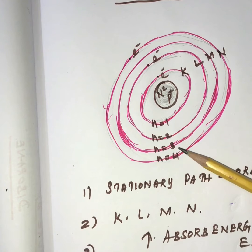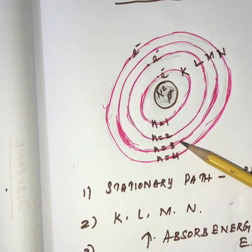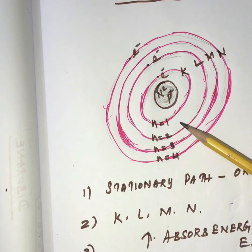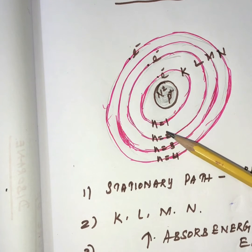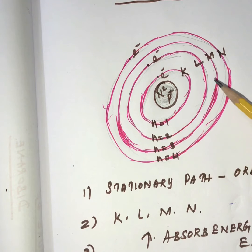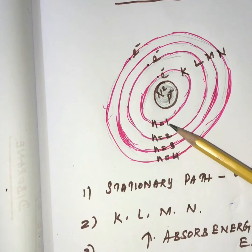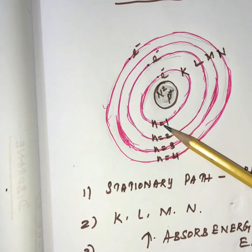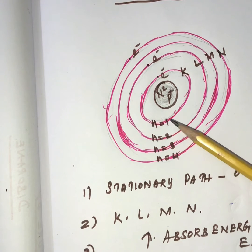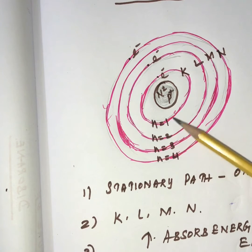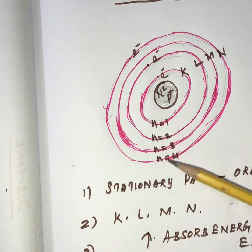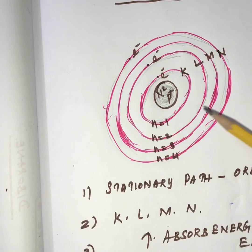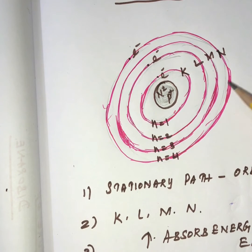The number of electrons in each energy level is calculated by 2N². The energy level or orbit is numbered as N=1, N=2, N=3, and N=4, corresponding to the K level, L level, M level, and N level.